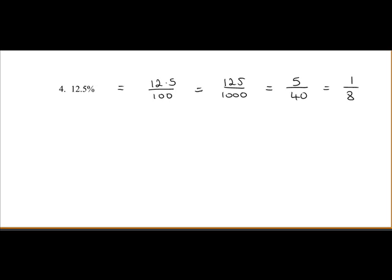So 12.5% is 1 over 8 as a fraction. To convert it to a decimal, we divide 12.5 by 100. So 12.5 divided by 100 is equal to 0.125. That's what it is as a decimal.